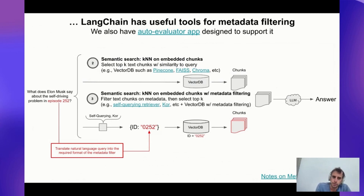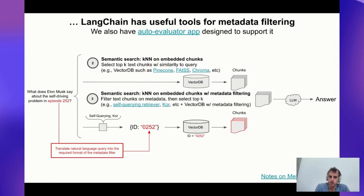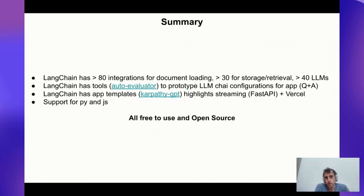Metadata filtering is a very interesting topic. We have an application — part of Auto Evaluator — where you can test different metadata filtering schemes. It can be a little tricky: I had an app built for the entire Lex Fridman podcast, and if you want to ask 'what did Elon say in episode 252,' you need a metadata filter for that. In some cases your metadata is stored in a non-obvious format, so the self-query retriever might fail and other libraries like Chroma may be more useful. Evaluating different metadata filtering schemes is quite tricky because it's often hard to infer metadata from a natural language query.